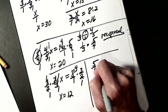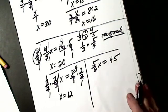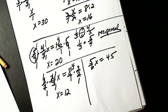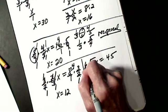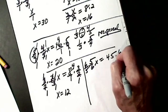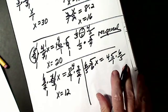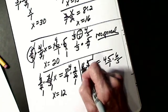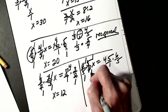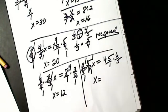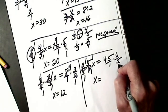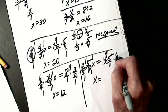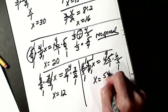Let's try 5 sixths x equals 45. To get rid of a fraction in an equation, I multiply by the reciprocal — multiply by 6 over 5 on both sides. Cancel: 5 into 5 is 1, 6 into 6 is 1, giving me 1x. On the other side, 5 into 5 is 1, 5 into 45 is 9, and 6 times 9 is 54. So x equals 54.